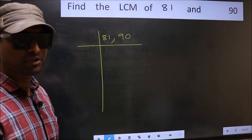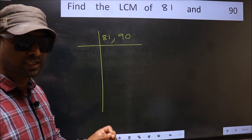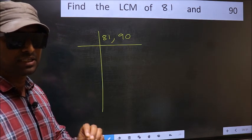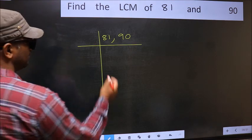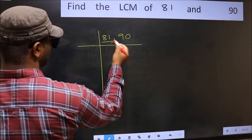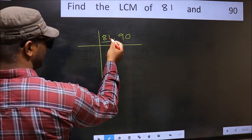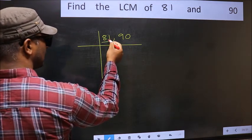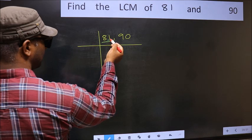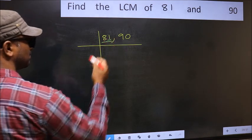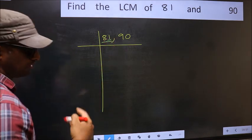Now focus on the first number, which is 81. The last digit is 1, which is not even, so this number is not divisible by 2.